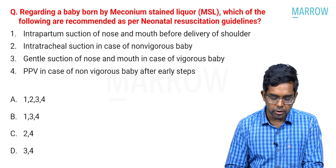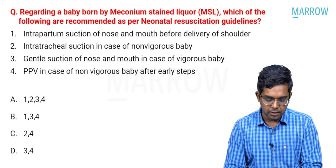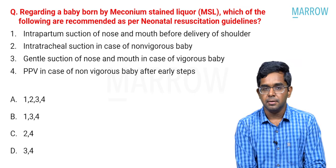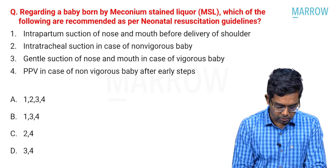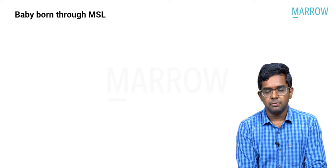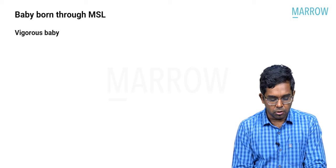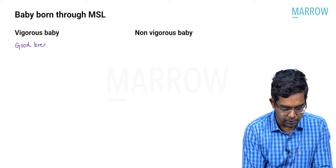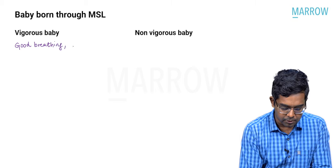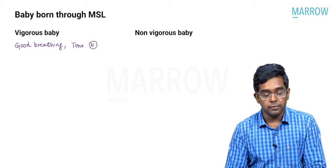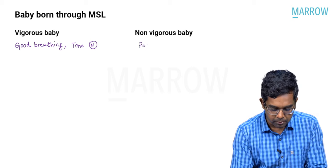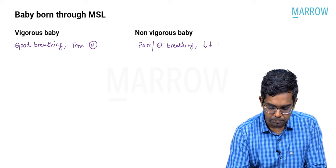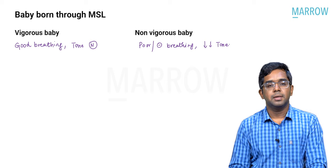Moving on to the next question about neonatal resuscitation — a baby born through meconium-stained liquor. Which of the following are recommended per neonatal resuscitation guidelines? Babies born through meconium-stained liquor are divided into two groups: vigorous babies — who have good breathing or are crying well with normal tone — and non-vigorous babies — who have poor or no breathing and decreased tone.